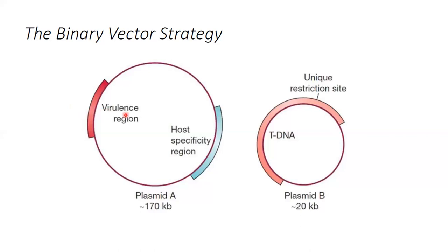Plasmid A has only two parts: the virulence region and the host specificity region. The second plasmid — as the name 'binary vector' suggests — contains only the T-DNA. The absence of T-DNA in plasmid A is complemented by plasmid B, which is roughly 20 kb. Together these two are approximately 190–200 kb, which restores the size of the natural Ti plasmid.